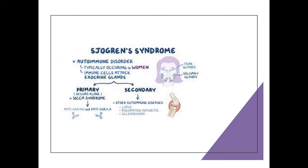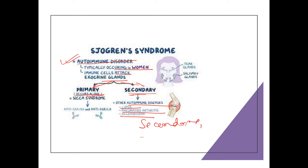Sjögren's syndrome is an autoimmune disorder, typically occurring in women, where immune cells attack the exocrine glands. It has two types — primary and secondary. Primary Sjögren's syndrome occurs alone, while secondary occurs with other autoimmune diseases like lupus, rheumatoid arthritis, and scleroderma.